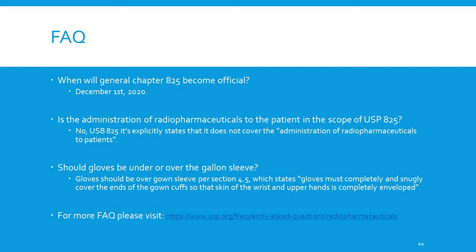Is the administration of radiopharmaceuticals to patients in the scope of 825? No — USP 825 explicitly states that it does not cover administration of radiopharmaceuticals to patients. Another common question: should gloves be worn under or over the gown sleeve? Gloves should be worn over the sleeve per section 4.5, which states gloves must completely and snugly fit over the ends of the gown's cuff so the skin of the wrist and upper hand is completely enveloped. There are many more FAQs available at usp.org under radiopharmaceuticals.